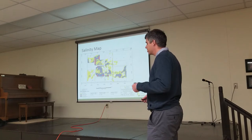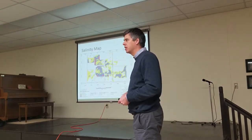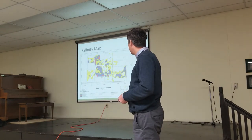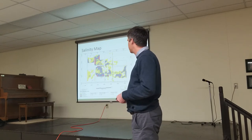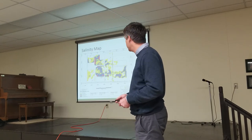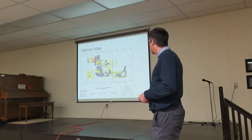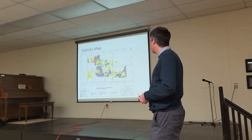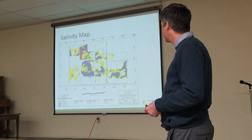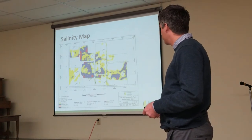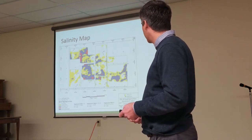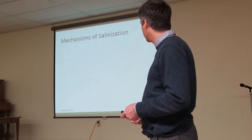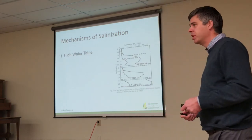We do measure salinity in-house with the EM38, and this is the CSIDC research station. Every five years we go and map that station just to watch for salinity trends. Looking at the map, where there's white, that's non-saline; yellow is slightly saline; blues are moderately saline areas; reds are severely saline areas. You can see at the center we do have some salinity issues that we're dealing with.